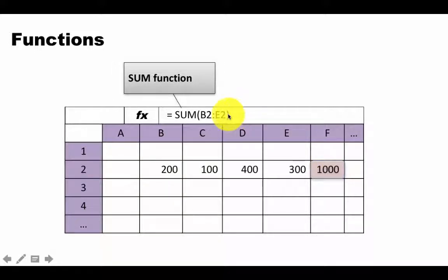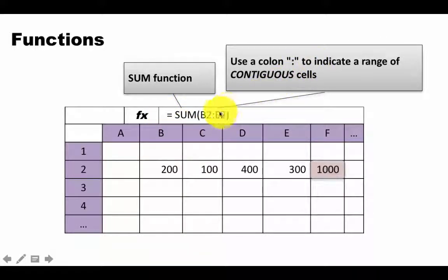Just to clarify, we are using the SUM function. The equals tells us that this is a formula, and B2 colon E2 is the argument that we are supplying, and it's a range. When we are indicating a range, we are indicating a range of contiguous cells. You cannot have a range in which the cells are broken up. A range always indicates a contiguous set of cells, meaning they are all connected with no break.